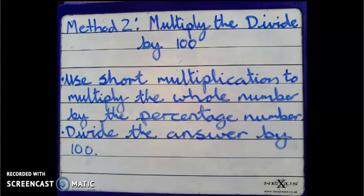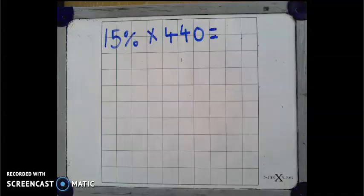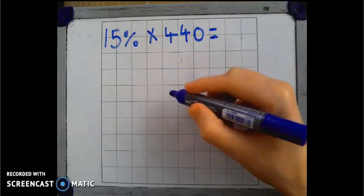Method 2 for multiplying percentages by whole numbers is to multiply then divide by 100. We first use short multiplication to multiply the whole number by the percentage number. And then after that, we divide the answer by 100. So let's first use that column multiplication.